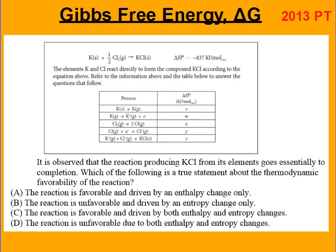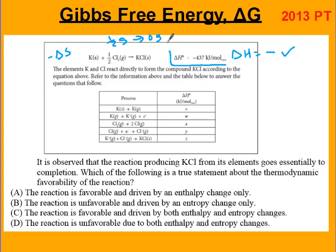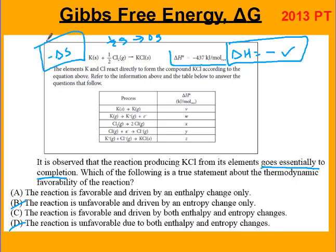Try the next problem. Delta H is negative, which goes towards a thermodynamically favorable reaction. For delta S, we have a solid, a gas, and a solid — we go from half of a gas to no gas, so delta S must be negative. The reaction is favorable because it essentially goes to completion, so the answer is either A or C. But only delta H is favorable here — we'd want a positive S for both enthalpy and entropy to favor the reaction. So the answer is A.